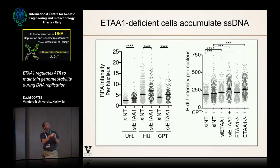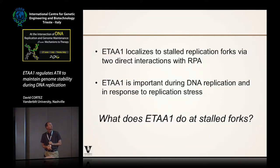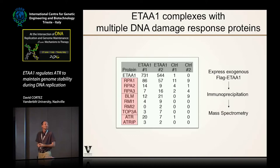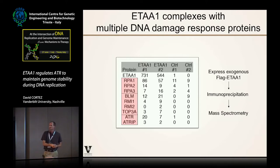I'll point out that the increased RPA intensity indicates that RPA is getting to the DNA, and that'll become important in a future experiment. So it's at forks, and it's important — but how does it work? We tagged ETAA1, expressed it in cells, immunoprecipitated it, and asked what it interacts with. We saw the RPA proteins as expected, the Bloom complex, the BTR complex, as well as the ATR-ATRIP complex itself. We don't usually see ATR in most immunoprecipitations of other replication stress response proteins, so that intrigued us.